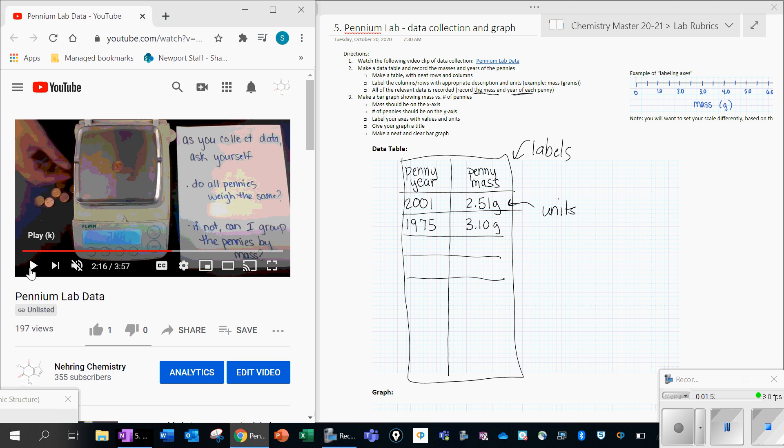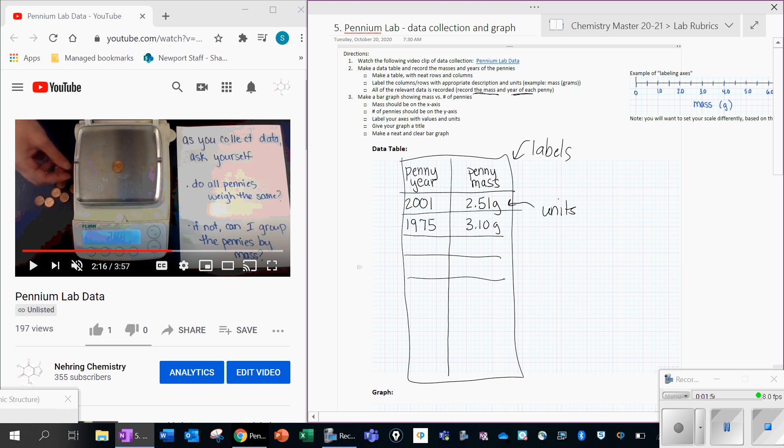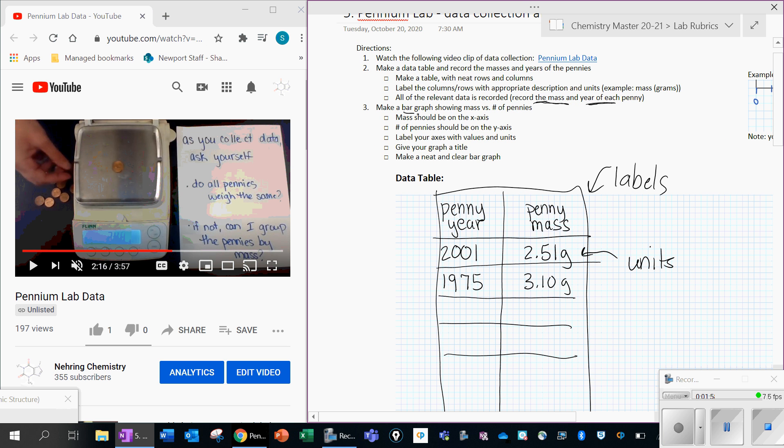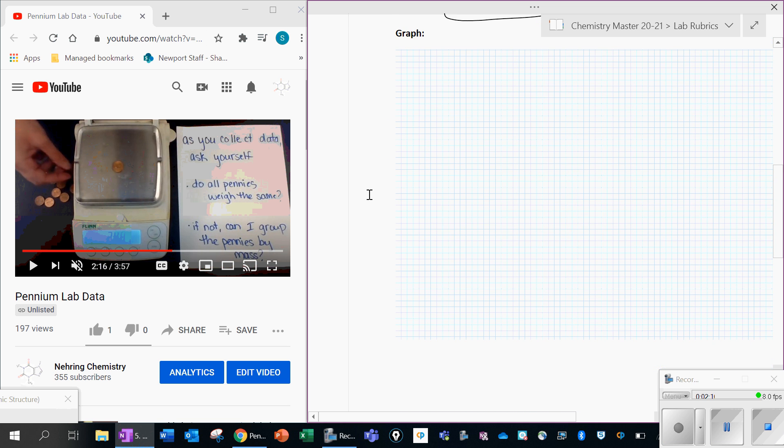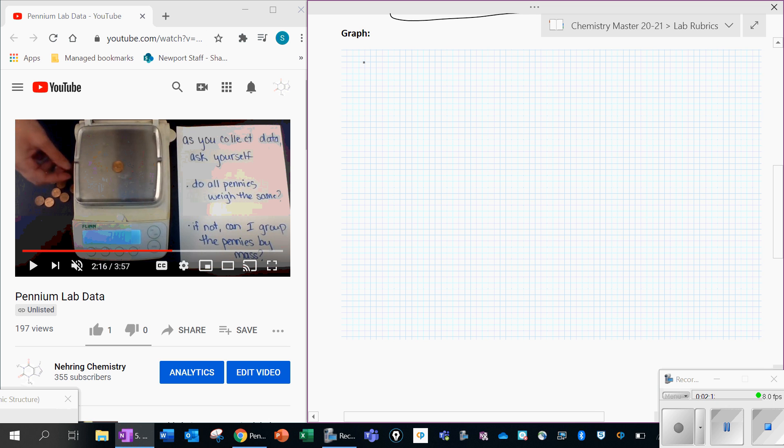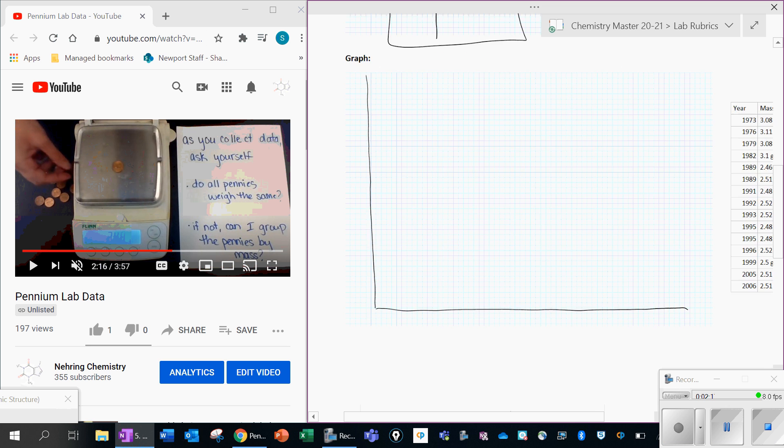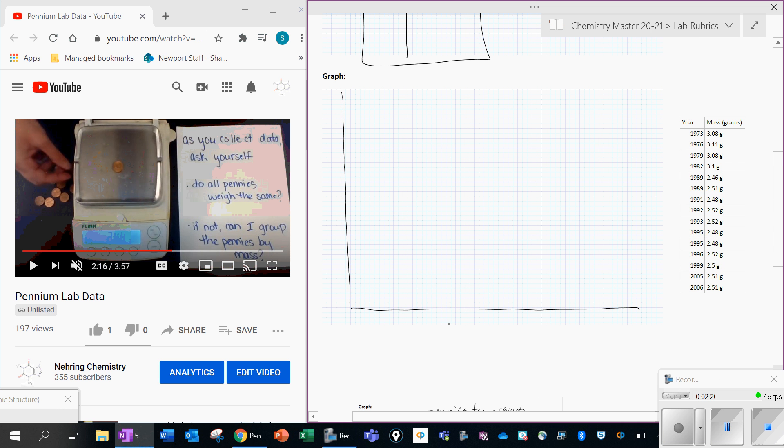And then we're going to go down here and we are going to make a graph. So some things about this graph. It should be a bar graph. And we tell you what the axes should be right here. So it's a bar graph with mass on the x-axis and number of pennies on the y-axis. So let's scroll down here. So the mass would be, and you can do this a little bit neater too using the drawing tool in OneNote. So the mass would be on the x-axis and then the number of pennies would be on the y-axis.